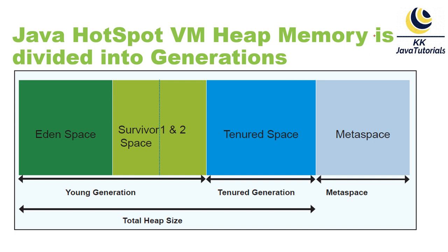The second part of heap memory is the tenured generation, sometimes referred to as old generation. The JVM moves objects that have lived long enough in the survivor spaces to the tenured space. When the tenured generation fills up, a full garbage collection occurs, which is often much slower because it moves all live objects. Minor GC happens in young generation; full GC happens in tenured/old generation.